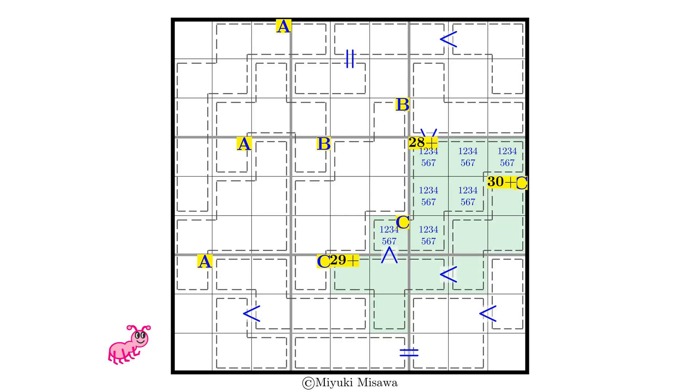But a 4-cell cage can't sum to more than 30, because it can't contain anything larger than 6, 7, 8, 9. That means we have locked the sums. 29 can only be 5, 7, 8, and 9. And the upper adjacent cage can only be 29 or 30.